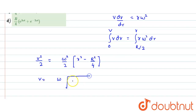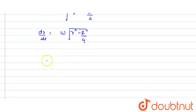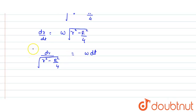Since we need to find the radial location, velocity is dr/dt. Substituting, we get dr/dt = ω√(r² − R²/4). Rearranging, dr divided by √(r² − R²/4) equals ω dt. We now integrate both sides.